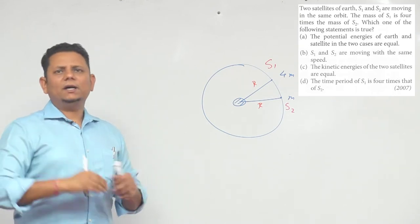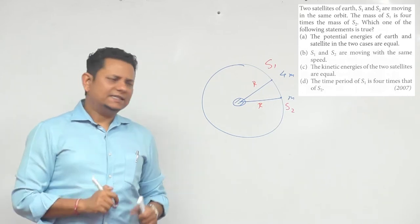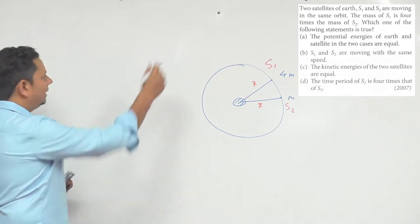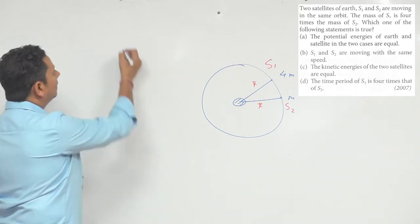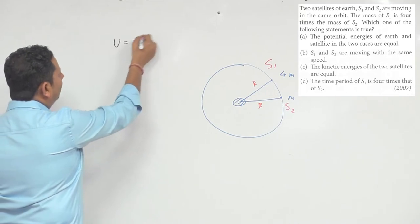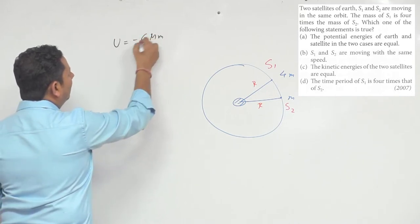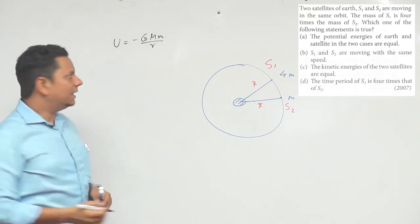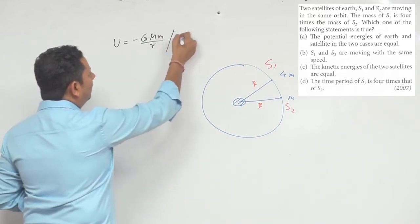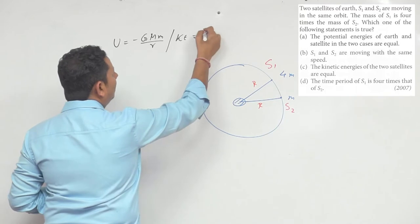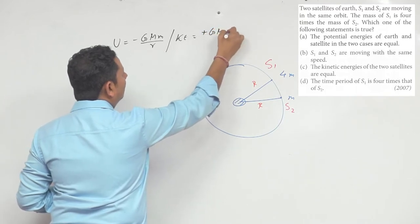So first let's see potential energy. Potential energy formula is minus GMm divided by r. This is the first formula, that will be equal to plus GMm divided by r.